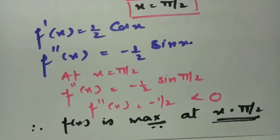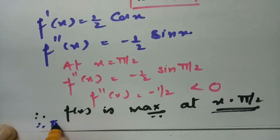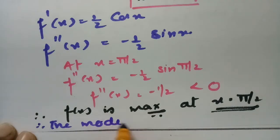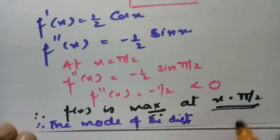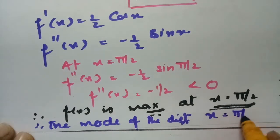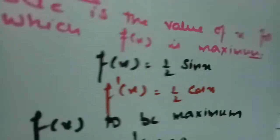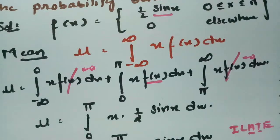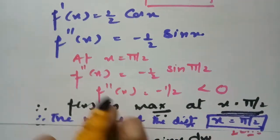Therefore the mode of the distribution is x = π/2. So the mean μ = π/2 and the mode = π/2.